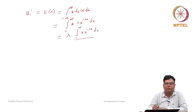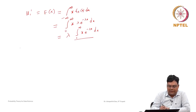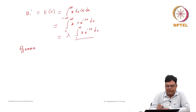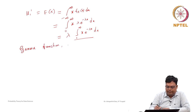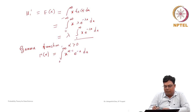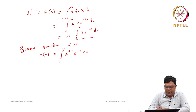You may have studied the gamma function in your mathematics or integral calculus courses. The gamma function is very important. Using this gamma function, we will also discuss a distribution called the gamma distribution. The gamma function for any alpha greater than 0 is defined as: Gamma(alpha) = integral from 0 to infinity of x^(alpha-1) e^(-x) dx.